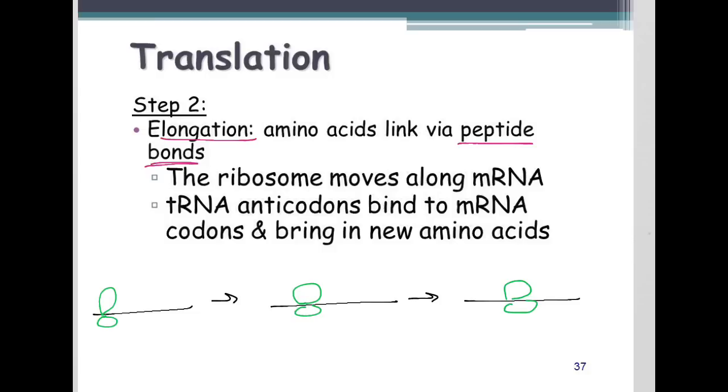The ribosome continues to move along the mRNA, and as it does, we'll have a growing polypeptide chain as it moves along, reading the mRNA. So, the ribosome moves along the mRNA. tRNA anticodons bind to codons and bring in a new amino acid. So, the next couple slides, I'm just going to show you what this looks like.